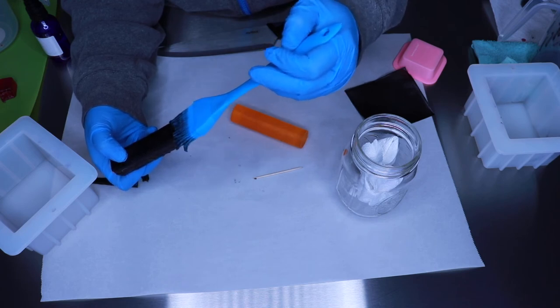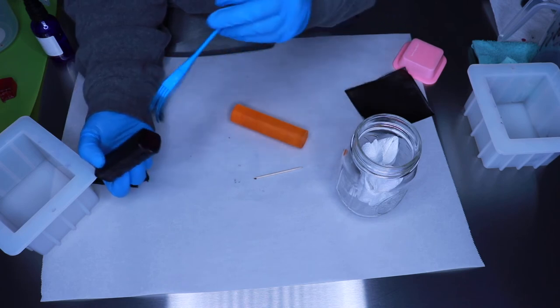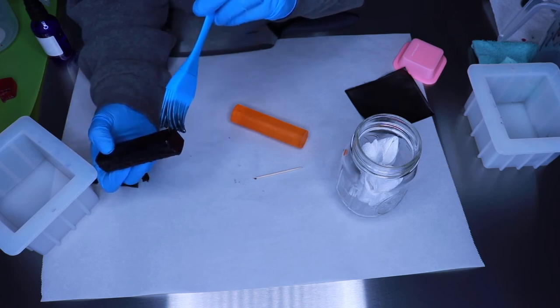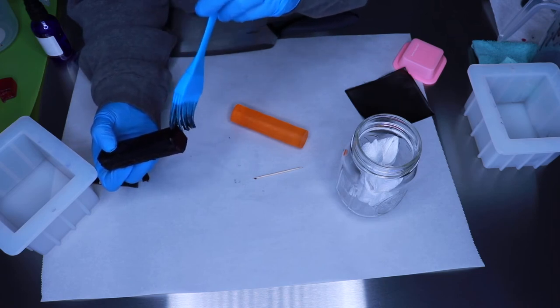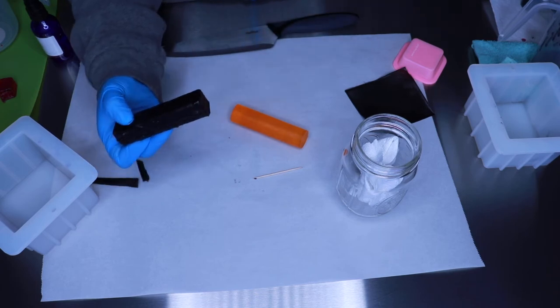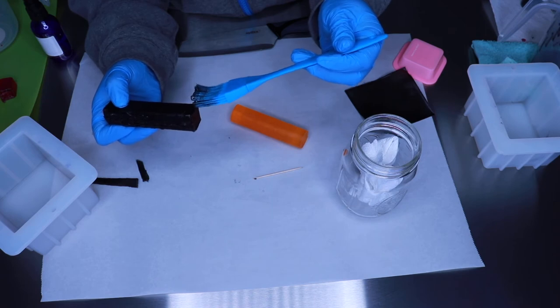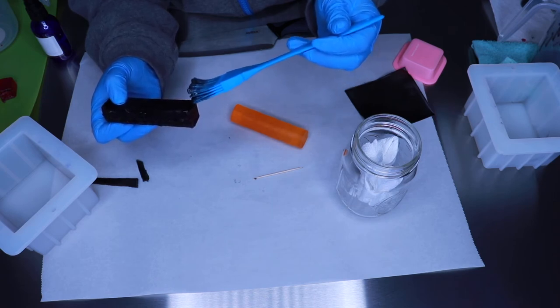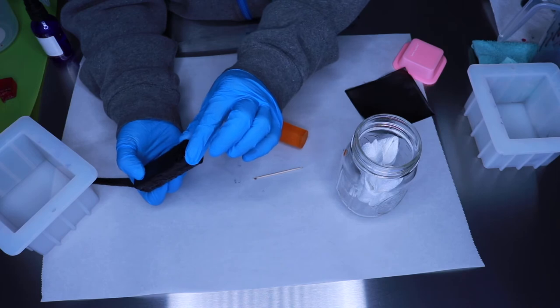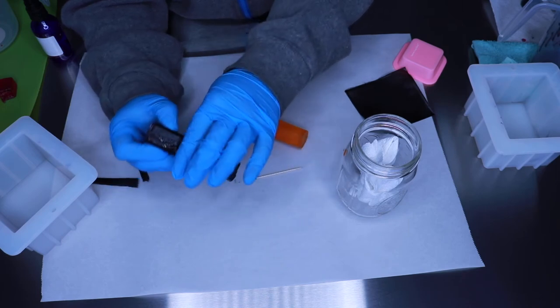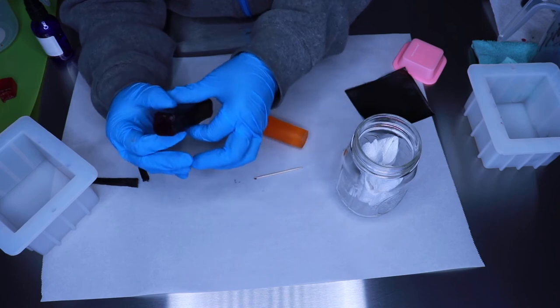As you can see, my brush is starting to get stiff because the melt and pour is starting to solidify. All you need to do when that happens is put it back in the microwave for about 15 seconds and leave your brush in there. Your brush is silicone and can handle high levels of heat.